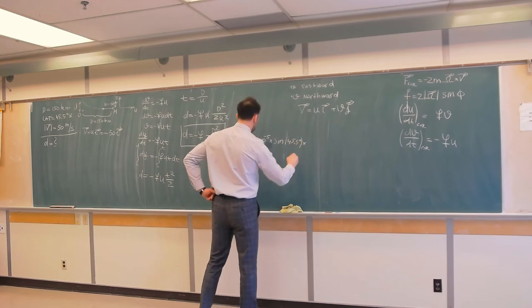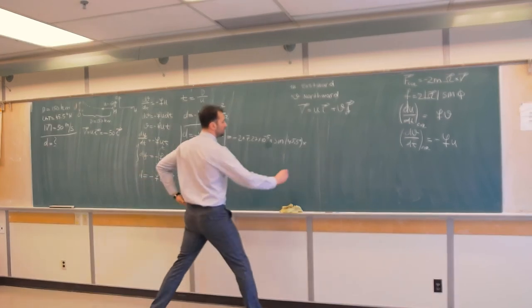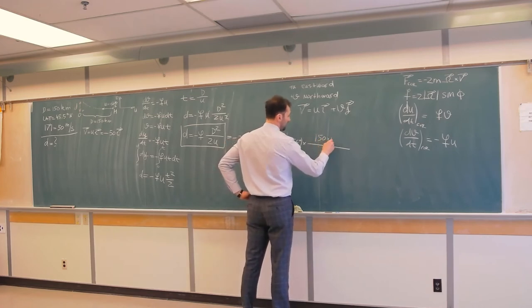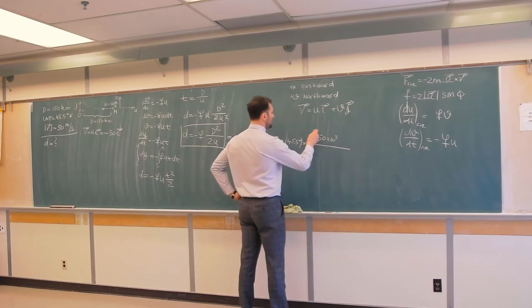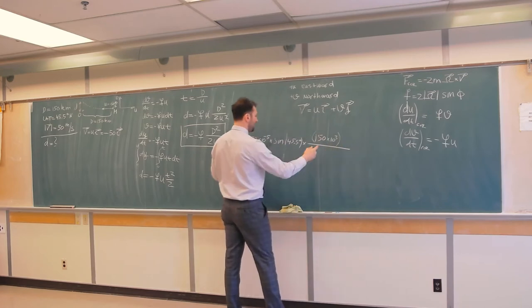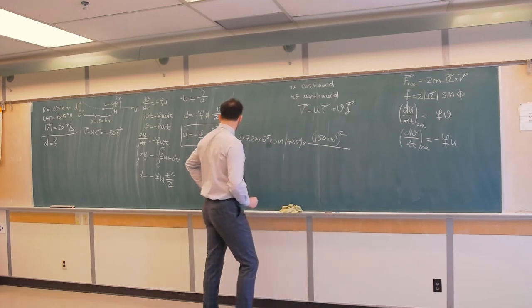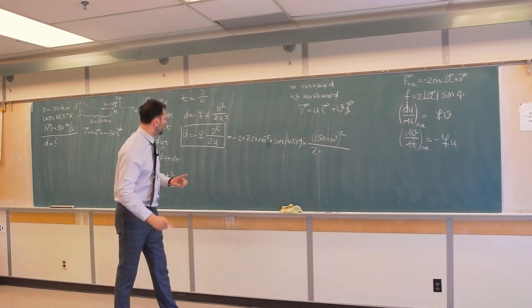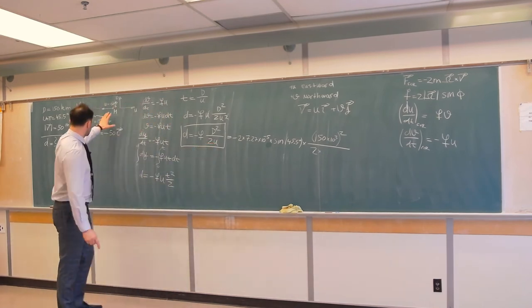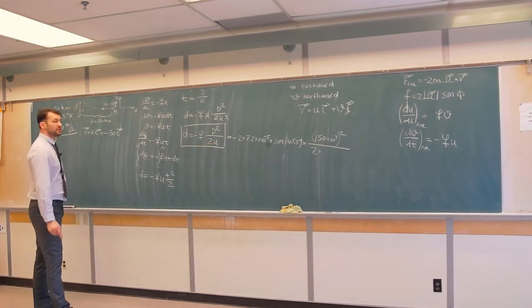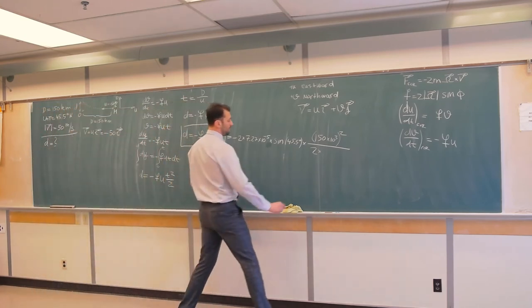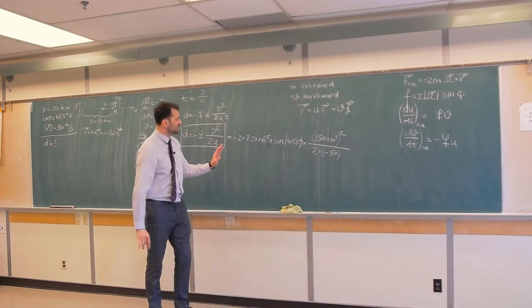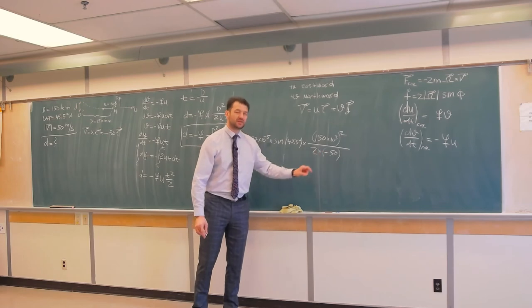Times D squared, that is 150 kilometers, and that means 150 times 10 to power 3 meters, because I want to have everything in nice units, this squared, divided by 2 times, now, this is caution, you have to put negative u here, because u is negative 50 meters per second, so times negative 50.